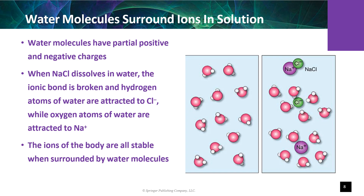Water constitutes 70% of body weight and contains most of the ionic compounds. Water's polarity forms a hydration shell and breaks the ionic bond. All ions are electrolytes because they are able to conduct electrical current in a solution. The ions sodium, chlorine, and bicarbonate have high concentration in extracellular fluid, while potassium, phosphate, and protein are high in concentration in intracellular fluid. This creates a positive charge on the outside and a negative charge on the inside of the cell.